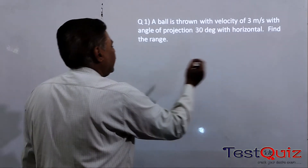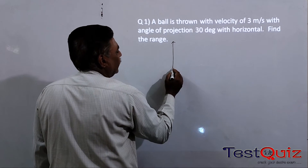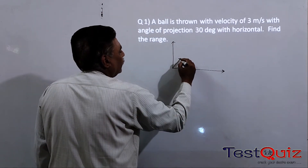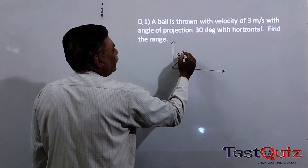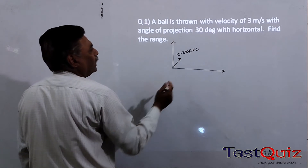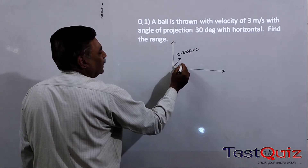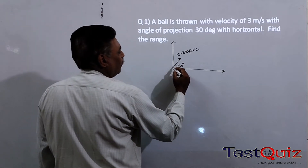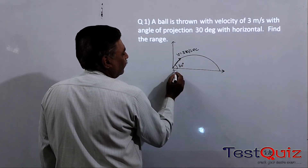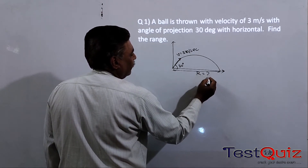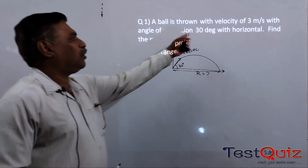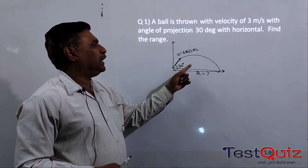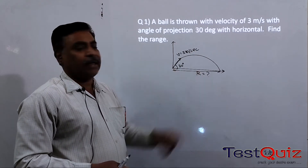We have to make a diagram here. This ball is thrown with a velocity — you are throwing a ball from here. The velocity is 3 meters per second and the angle is 30 degrees with the horizontal. When we throw it, the horizontal distance it covers is called the range. So what is the range equal to? The ball is thrown with velocity 3 meters per second, angle of projection 30 degrees — find the range.